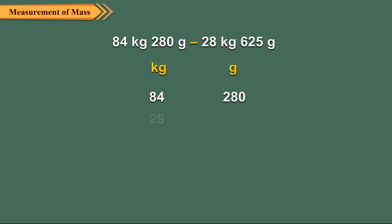Let us now subtract 28 kilogram 625 grams from 84 kilograms 280 grams. Arrange the measures in their respective columns and subtract the grams.